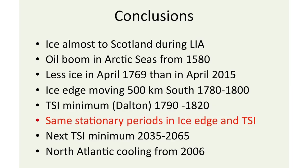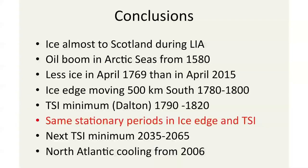My conclusions: we had ice almost to Scotland during the Little Ice Age. The oil boom in Arctic seas from 1850–80. Less ice since 1769 than in April 2015. The ice edge moved 500 kilometers south during this short period. This can happen again if we go into a Dalton minimum. And we found some stationary periods, which is very important — if we find those, we can say something about the future; it's not just chaotic changes. So we predict a minimum here, and the cooling has already started. Thank you.